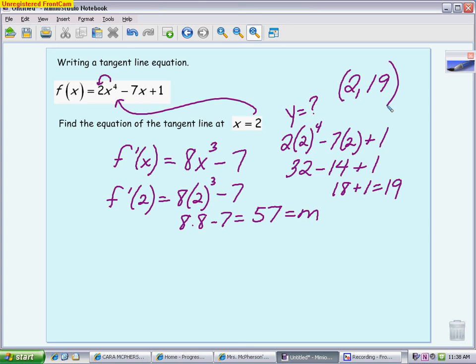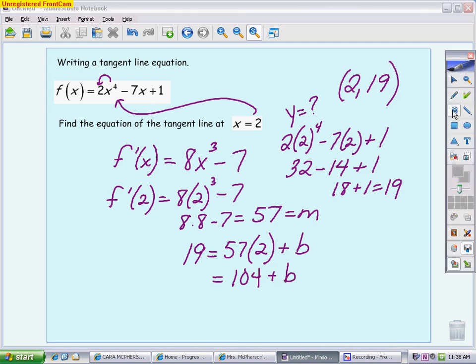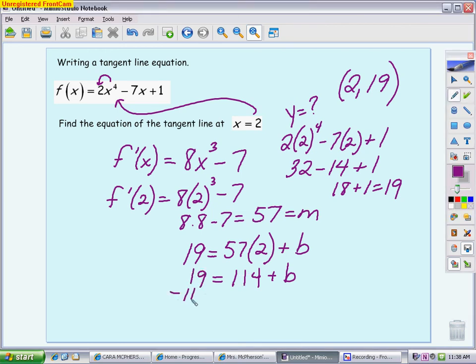And then you're going to use y equals mx plus b, or you could use point slope. So y is 19, your slope is 57, your x is 2, and we're looking for your b, your y-intercept. So we've got 114 plus b. Subtract 114 from 19, you're going to get negative 95. And that's your b value. And so your equation for your tangent line would be y equals 57x minus 95.